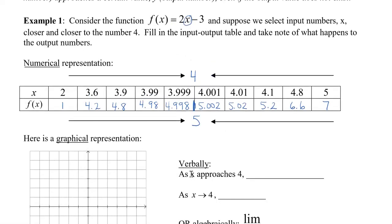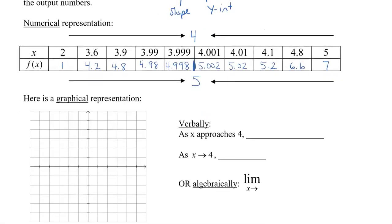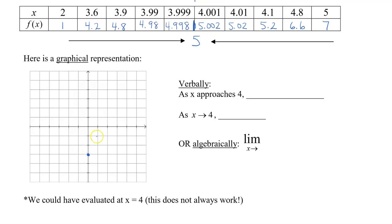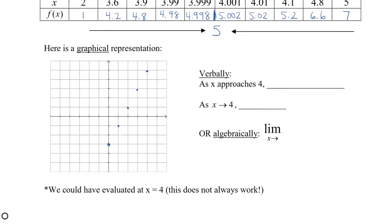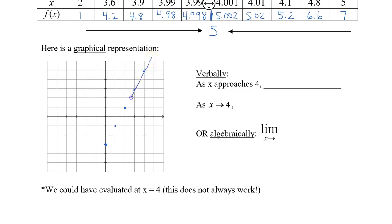Graphically, I'm going to graph 2x minus 3. That gives me a y-intercept of negative 3 and a slope of 2. I start off at negative 3 with slope 2, graph a whole bunch of points, then connect them with a ruler. I can see graphically that as my x value approaches 4, following the graph, it approaches the point where the y value is 5. So that agrees with the numerical result.